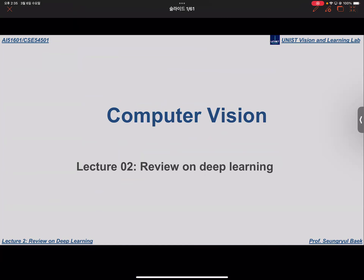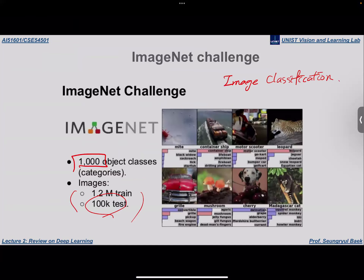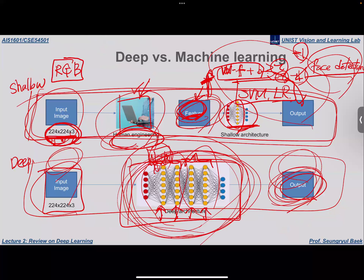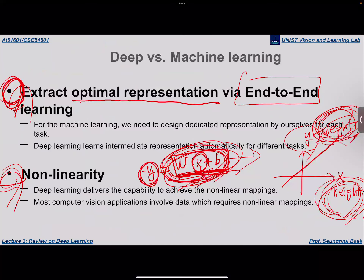In the last class we learned about deep learning. We briefly reviewed how deep learning becomes popular and the difference between the pipeline of shallow learning and deep learning architecture, and the reason why deep learning performs better than a shallow learning approach.